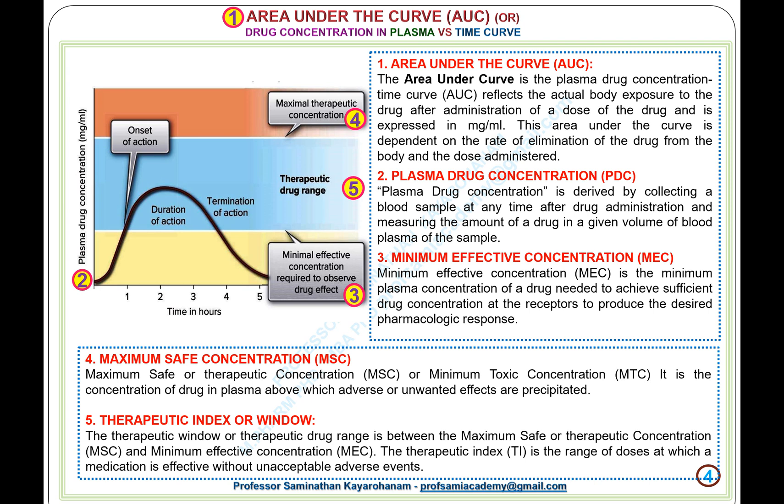2. Plasma Drug Concentration (PDC): plasma drug concentration is derived by collecting a blood sample at any time after drug administration and measuring the amount of a drug in a given volume of blood plasma. 3. Minimum Effective Concentration (MEC): the minimum plasma concentration of a drug needed to achieve sufficient drug concentration at the receptors to produce the desired pharmacologic response.